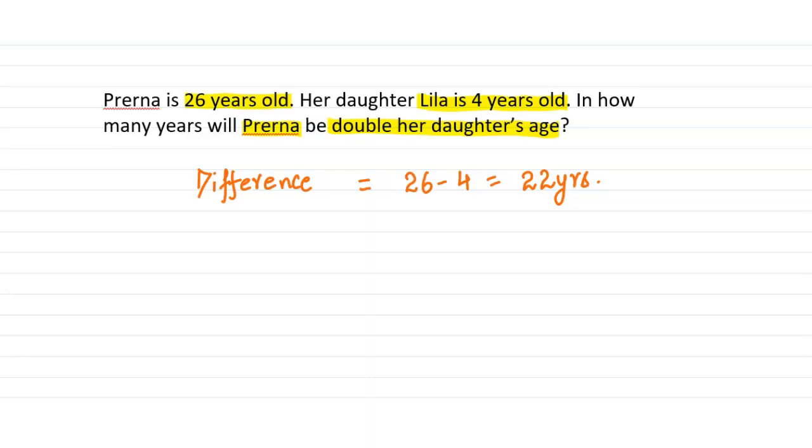So let's suppose at that time when Prerna's age is double her daughter's age, let the daughter's age be x years. Then Prerna's age should be 2x. So the difference between their ages should still be 22.